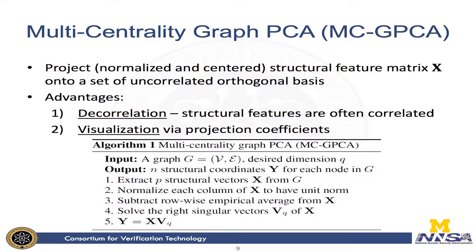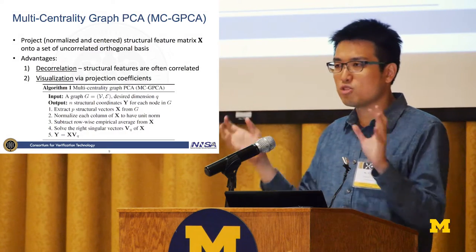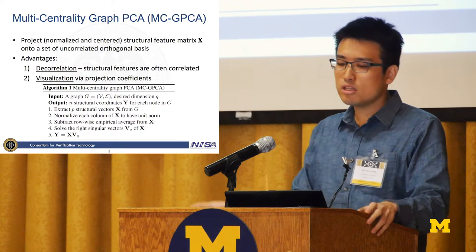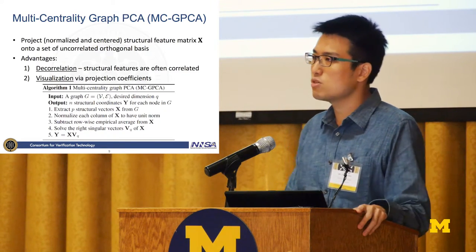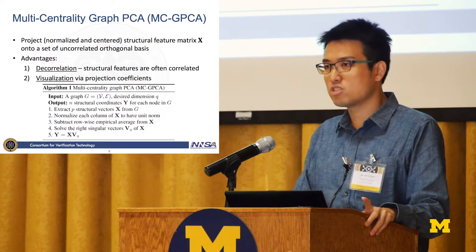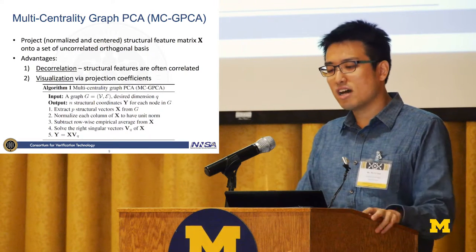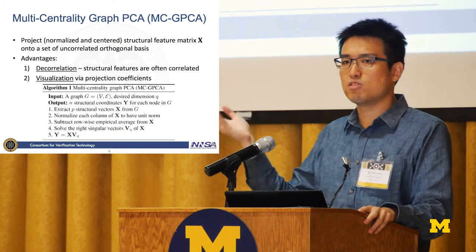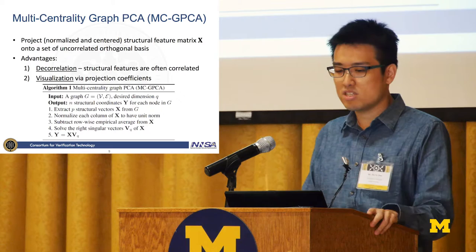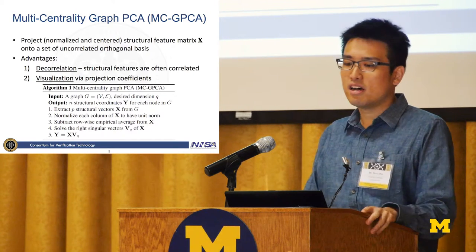Here is our first technique: graph principal component analysis from structural features. Once we have extracted several structural features, we project the feature matrix onto a set of uncorrelated orthogonal bases that preserve maximum projected variance, performing dimensionality reduction. Two advantages arise: first, extracted graph features like centrality measures are highly correlated, so decorrelation avoids overwhelming problems; second, each node is represented from a high-dimensional P-dimensional space down to a much lower Q-dimensional space, enabling better visualization of what's happening in the graph.